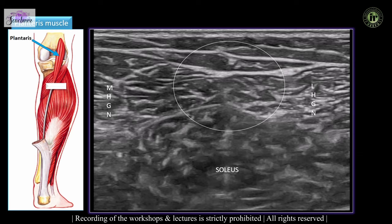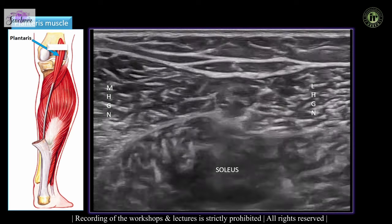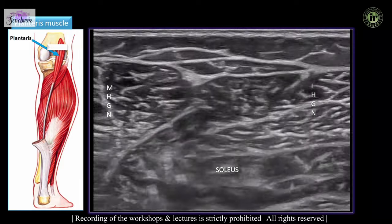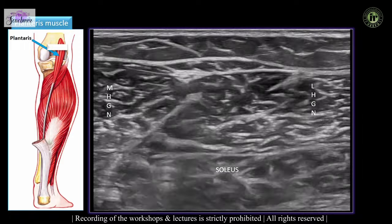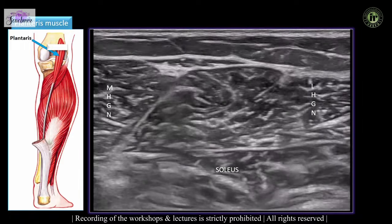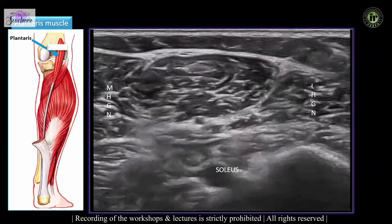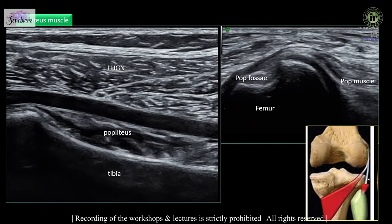The plantaris muscle can be identified in short axis view, appearing between the two heads of gastrocnemius as a triangular muscle belly that becomes more prominent as it moves upward toward its insertion into the supracondylar ridge of the femur. The popliteus muscle forms the base of the popliteal fossa and can be identified underlying the popliteal vessels in long axis; we can also demonstrate its insertion into the popliteal fossa.